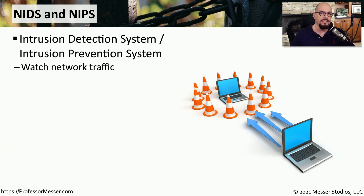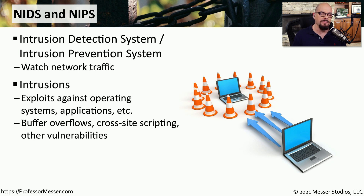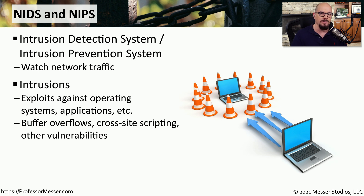A network-based intrusion detection system, or more commonly a network-based intrusion prevention system, is designed to look at traffic going through your network, identify any known attacks that may be inside of that traffic, and block or mitigate those attacks in some way. These attacks are commonly focusing on individual operating systems or application servers, attacking known vulnerabilities such as buffer overflows, database injections, cross-site scripting, and other known vulnerabilities.